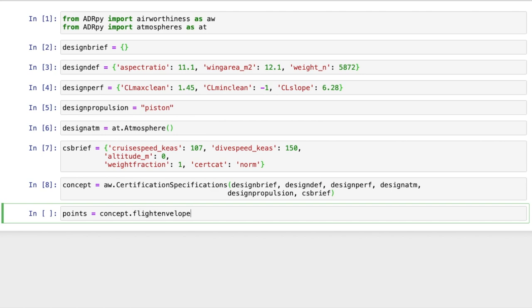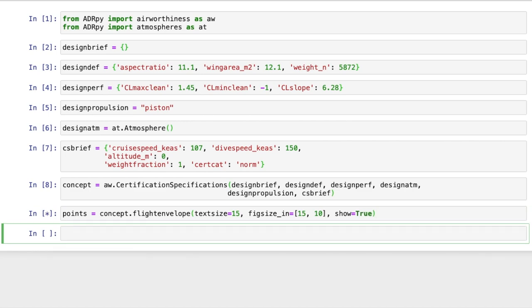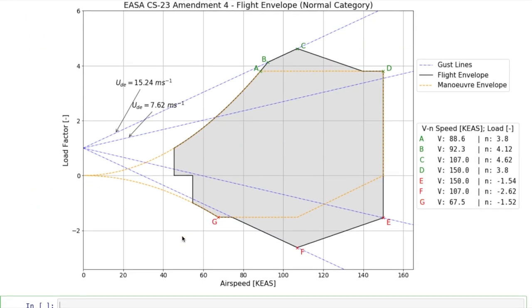We plot the flight envelope for this aircraft using the flight envelope method included in the certification specifications class. It takes some basic sizing parameters and generates a diagram. It returns a dictionary containing the coordinates of all the labeled points. These are also listed in the legend of the diagram.